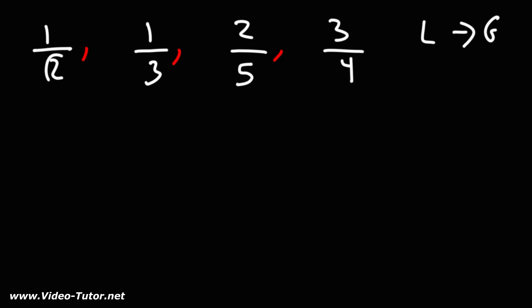60 divided by 2 is 30. So I'm going to multiply 1 over 2, the first fraction, by 30 over 30 and that will give me a common denominator of 60.